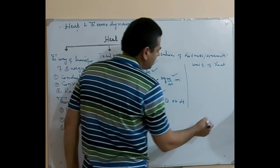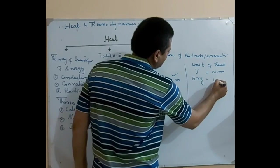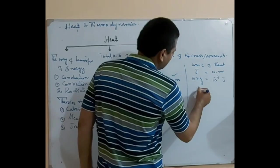SI unit means joules, which is equal to Newton times meter. In the CGS system, the unit of heat is calories.